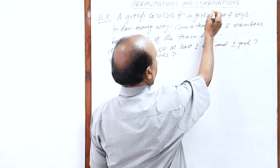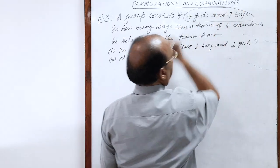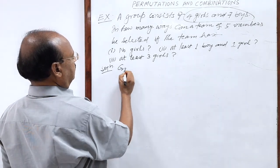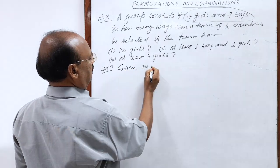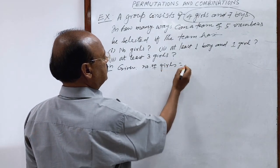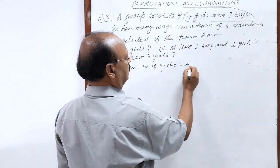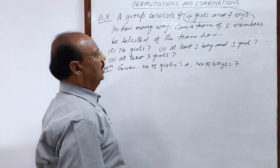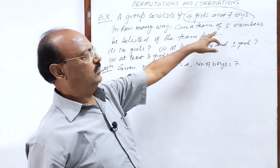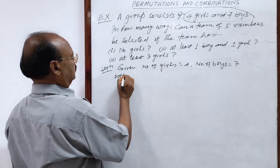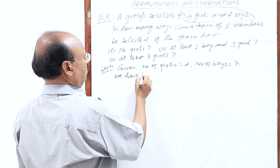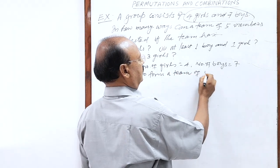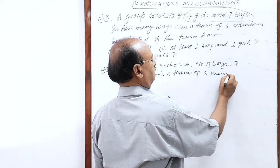Here, what is given? Four girls and seven boys. Number of girls is four and number of boys is seven. And we have to form a team of five members.